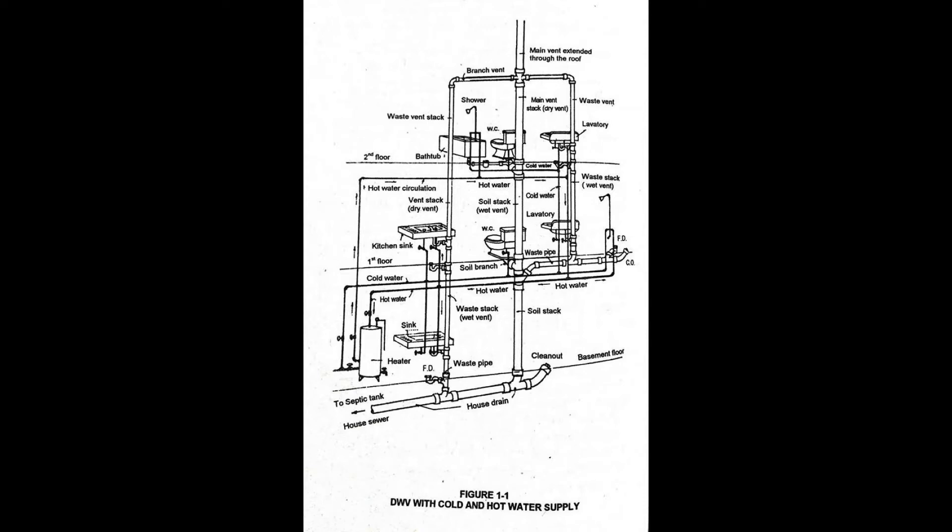Loop vent is the same as circuit vent except that it loops back and connects with a stack vent instead of a vent stack. Main is the principal artery of any system of continuous piping to which branches may be connected. Main sewer is a sewer line or system directly controlled by public authority.